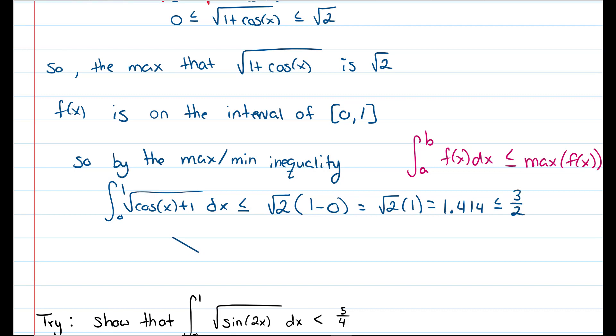So we get that the integral from 0 to 1 of the square root of cosine x plus 1 is less than or equal to 3 halves, and we're done.